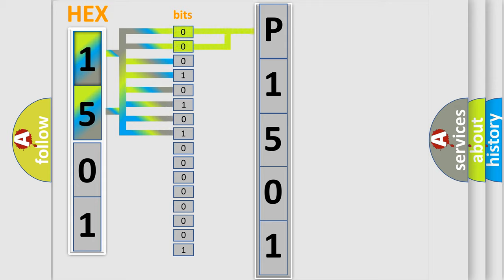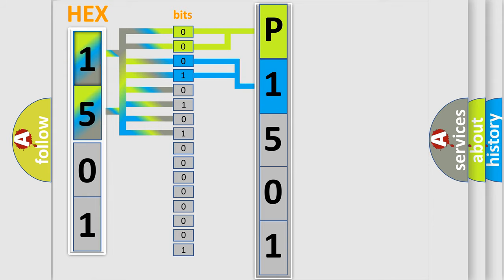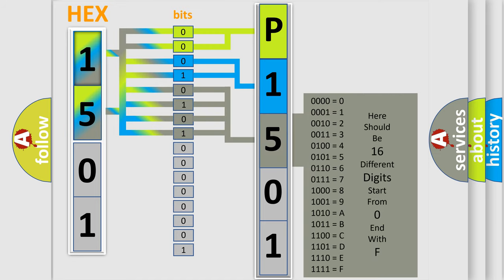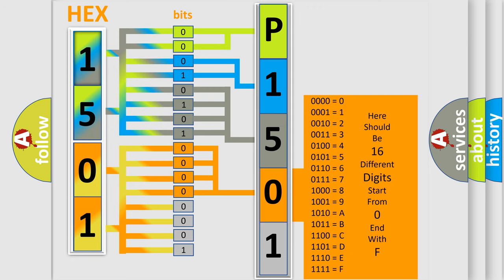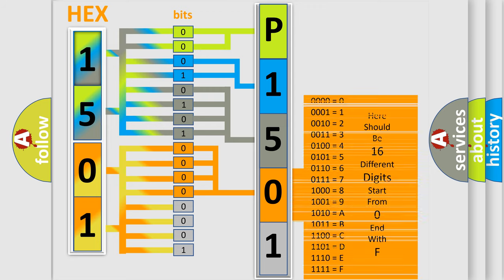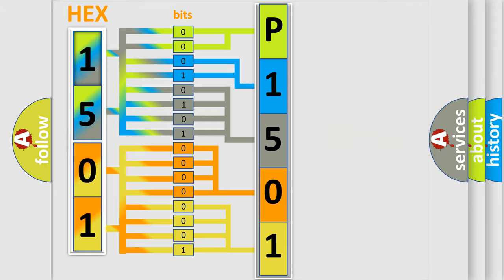By combining the first two bits, the basic character of the error code is expressed. The next two bits determine the second character. The last four bits of the first byte define the third character of the code. The second byte is composed of a combination of eight bits: the first four bits determine the fourth character, and the last four bits define the fifth character. A single byte conceals 256 possible combinations.